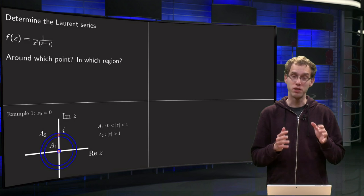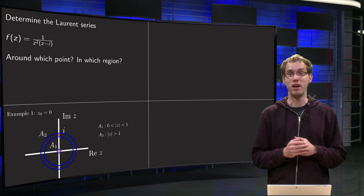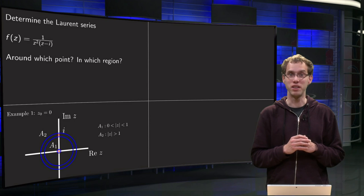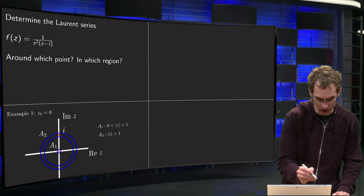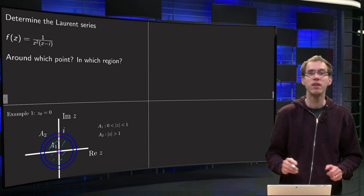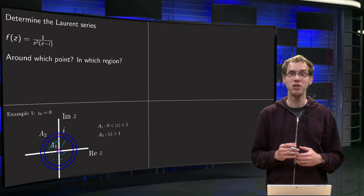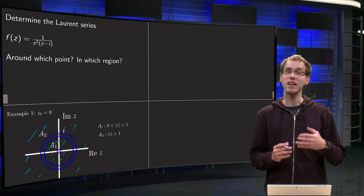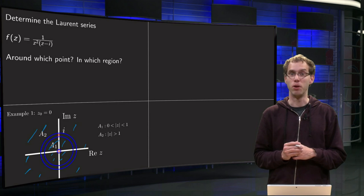Let's take as our first example the center point z = 0, so we expand around z = 0. The 1/z² is fine already, because it is already in the form z to the power n, so we are only left with the 1/(z - i). Expanding around z = 0, we can expand until we reach the first singularity at z = i. So we can make an expansion in the annulus between 0 and i, with radius 1. We can also make an expansion in the second annulus beyond radius 1. So in this case we have two Laurent expansions: annulus A1 where |z| is between 0 and 1, and annulus A2 where |z| > 1.